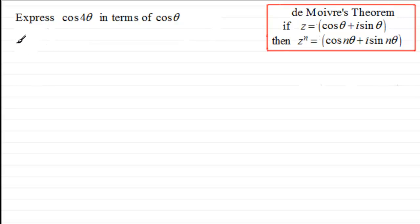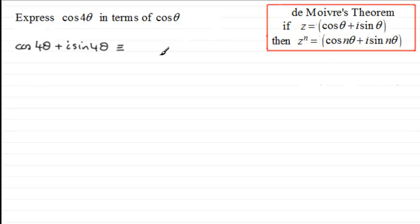For an example like this, we write down cos(4θ) + i·sin(4θ), and by De Moivre's theorem this is identical to (cosθ + i·sinθ) all to the power 4.